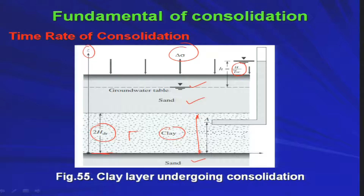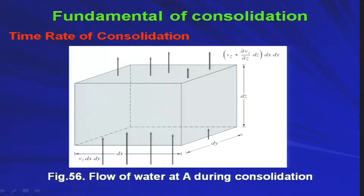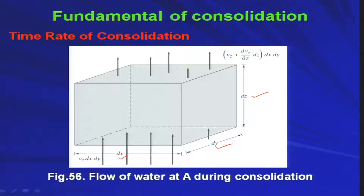We consider a three-dimensional soil element in the clay deposit with dimensions DZ in the Z direction, DY in the Y direction, and DX in the X direction. The total volume is DX × DY × DZ. We consider 1D flow — meaning flow occurs in only one direction — which is another assumption in establishing the 1D consolidation theory.